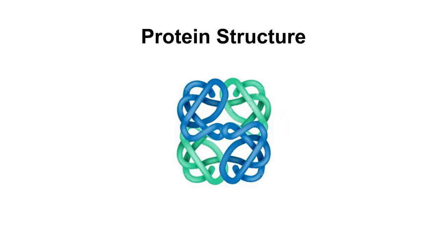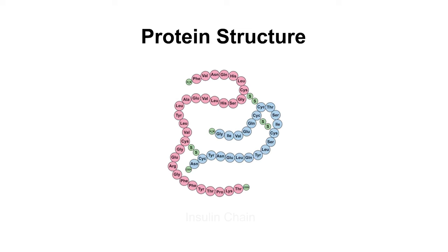Lastly, we have the quaternary structure. Some proteins are composed of two or more polypeptide chains referred to as subunits. The spatial arrangement of these subunits with respect to each other is known as quaternary structure. For example, insulin is a protein composed of two chains: an A-chain with 21 amino acids and a B-chain with 30 amino acids.